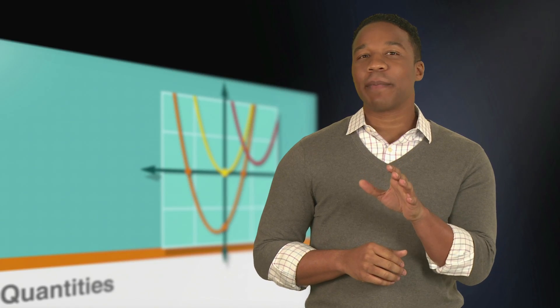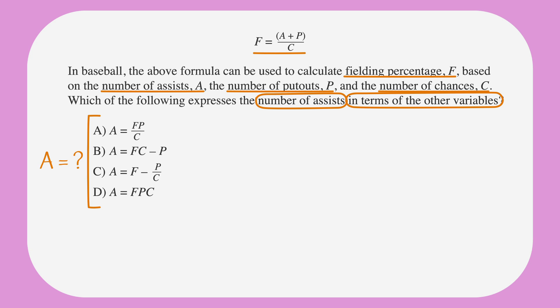Let's go over the same question about baseball statistics, but this time we'll solve it with algebra. Once again, here's the question: In baseball, the above formula can be used to calculate fielding percentage F, based on the number of assists A, the number of put-outs P, and the number of chances C. Which of the following expresses the number of assists in terms of the other variables? We know we can solve this question by picking numbers, but this time we're going to try actual algebra. We know that F equals A plus P over C.